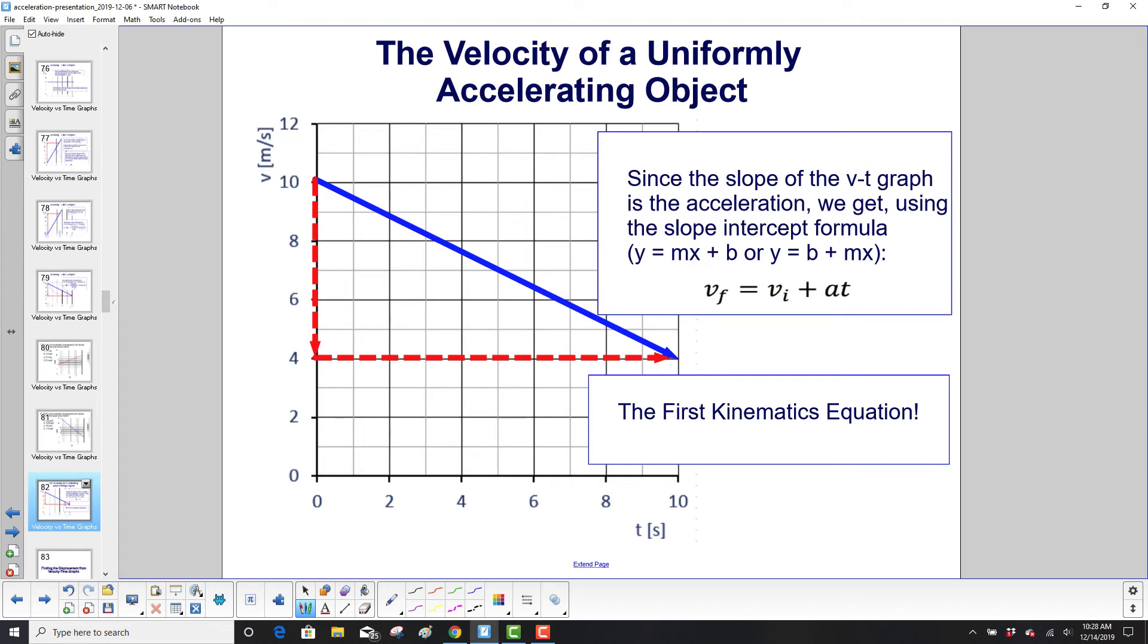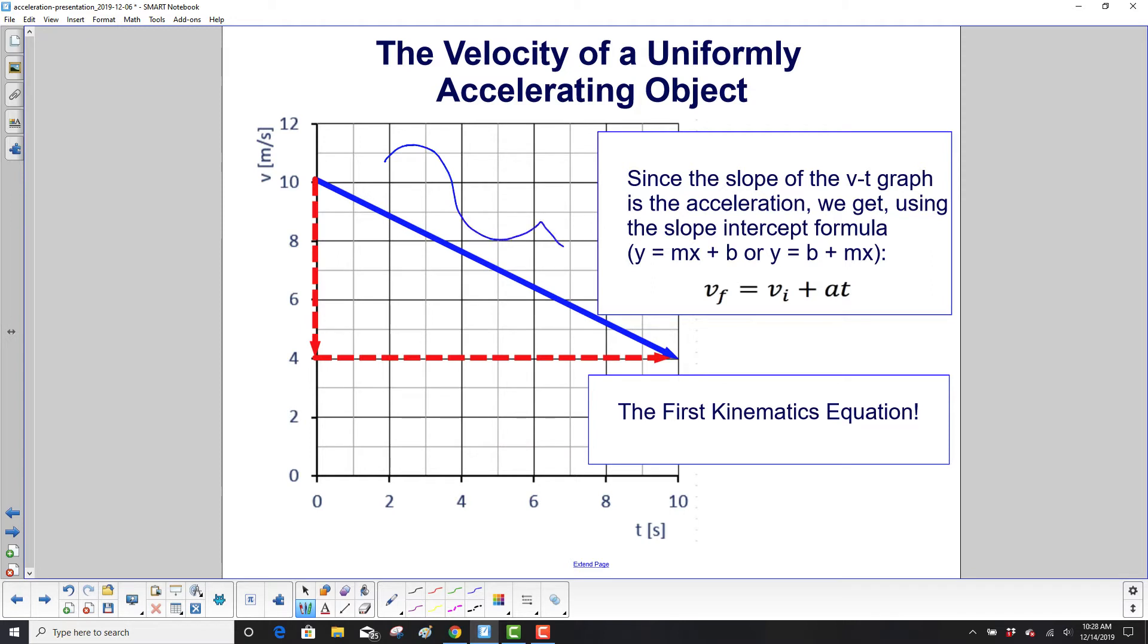Here's something that's really cool. Since the slope of the v-t graph, and we're talking about this line here, is the acceleration, we compare this to the slope-intercept formula, where you have y equals mx plus b. We're just going to move this around a little, put the b in front of the mx. Why are we doing that? Well, let's look.